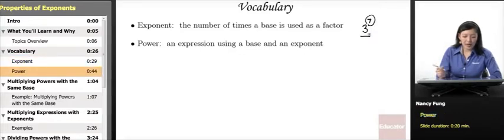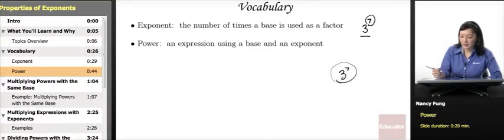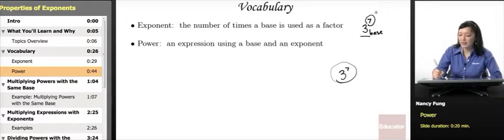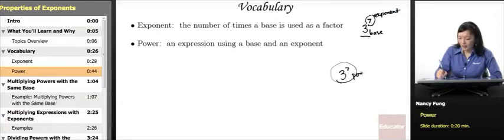The power is an expression using a base and an exponent. So in 3 to the 7th, this entire unit is your power. To recap: this is your base, this is your exponent, and the base and the exponent together is your power.